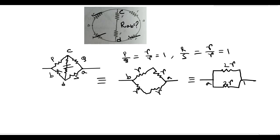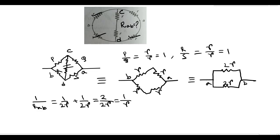The points are A and B. The equivalent resistance between A and B is R_AB = 1/(2R) + 1/(2R) = 2/(2R), which equals 1/R. So R_AB equals small r. The equivalent resistance between points A and B is small r.